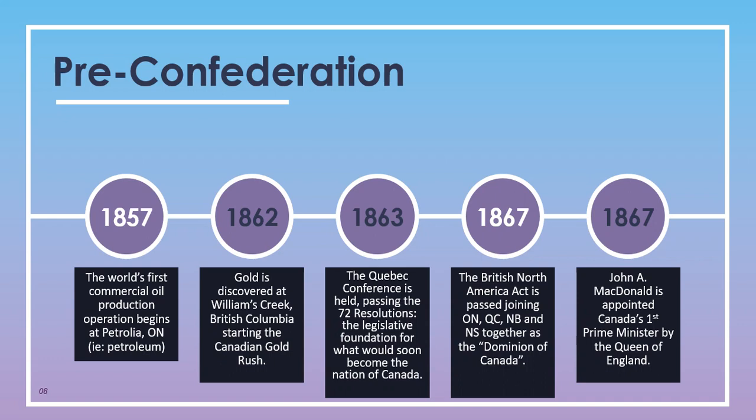In 1863, the Quebec Conference was held, passing the 72 resolutions which formed the legislative foundation for what would soon become the nation of Canada. In 1867, the British North America Act was approved by the English monarchy and joined Ontario, Quebec, New Brunswick, and Nova Scotia together as the newly formed Dominion of Canada. On that same day, July 1st, 1867, John A. Macdonald was appointed Canada's first Prime Minister by the Queen of England and was also given a knighthood in the same ceremony.